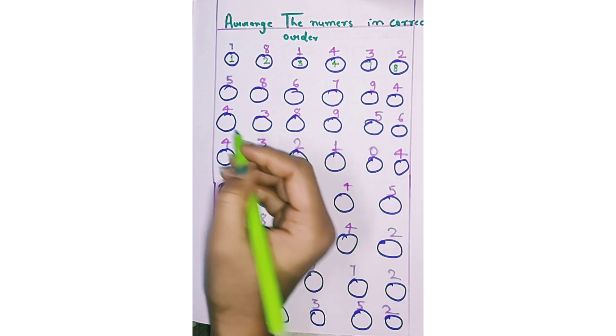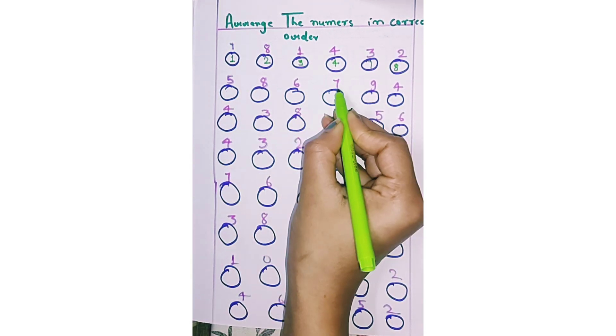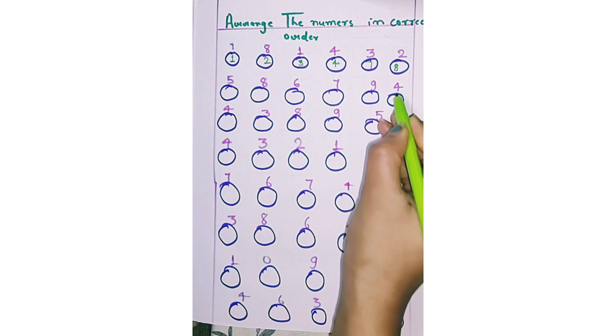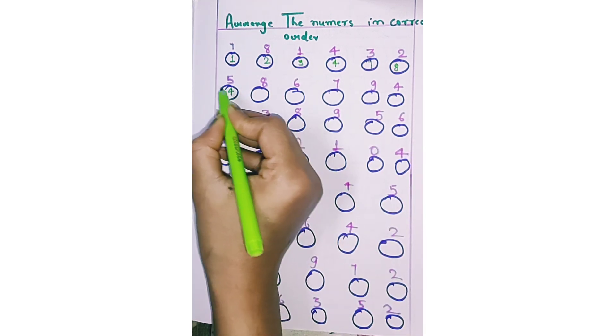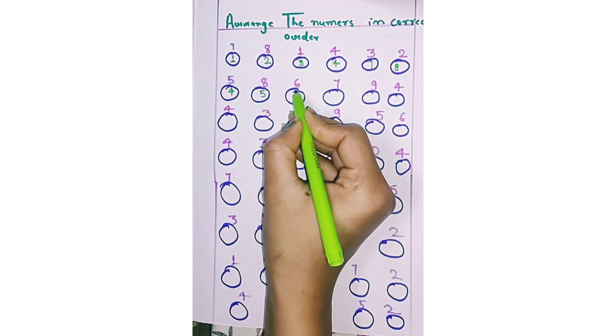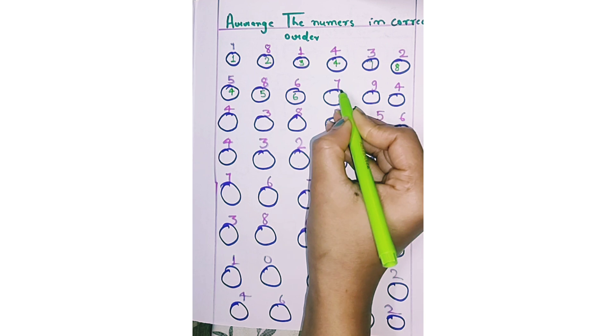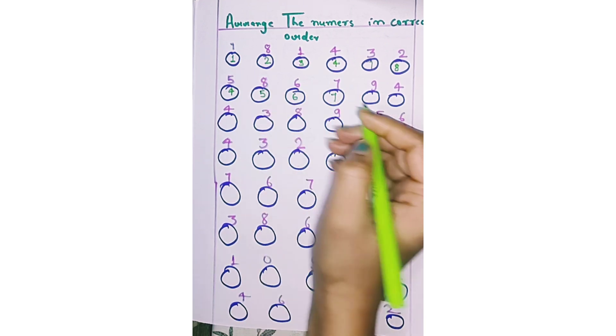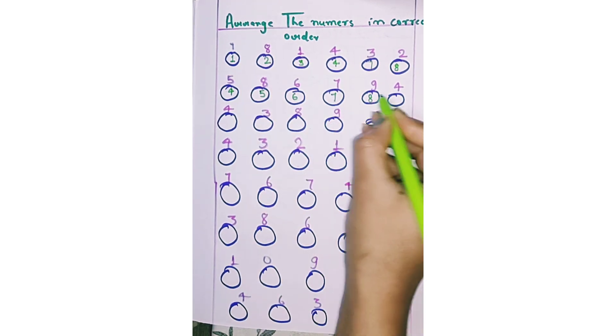8, next 5, 8, 6, 7, 9, 4. First 4, next 5, next 6, next 7, 8, and 9.